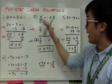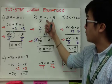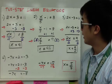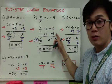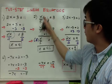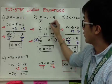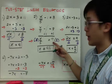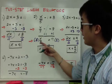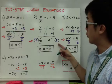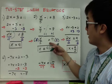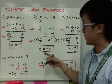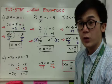For number 2, x over 5 minus 1 equals 8: first add 1 to both sides to get rid of negative 1, leaving x over 5 equals 9. Then multiply both sides by 5 to get x equals 45. So we added and then multiplied to isolate x.